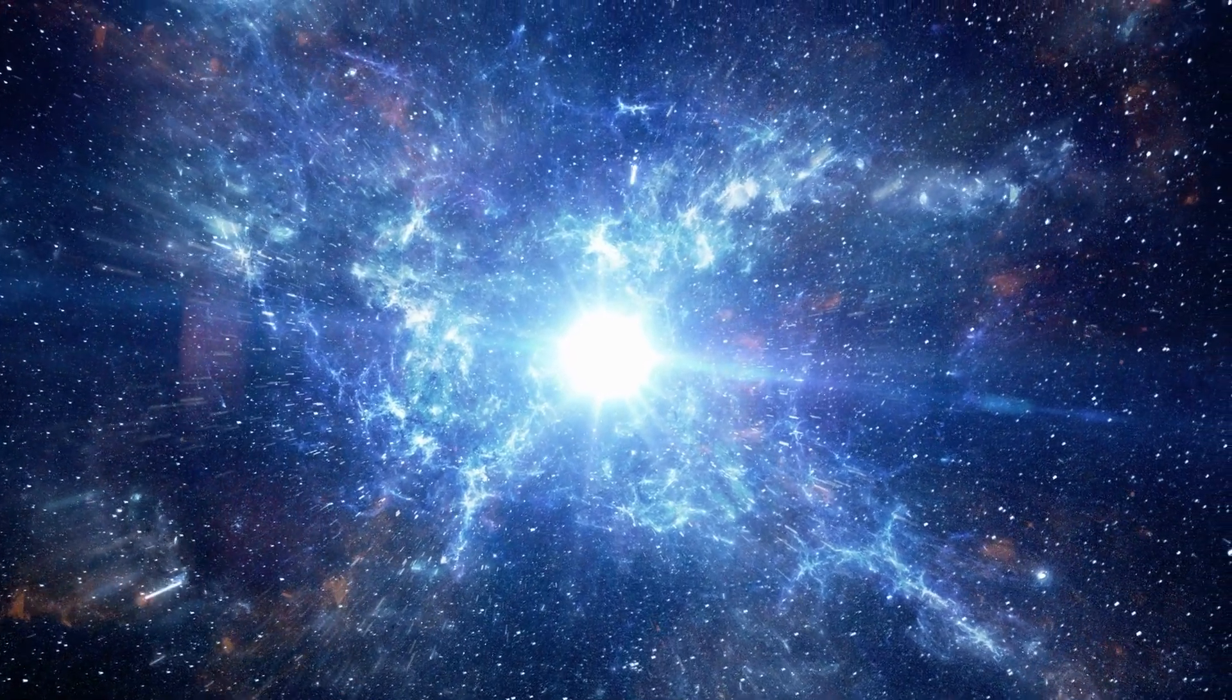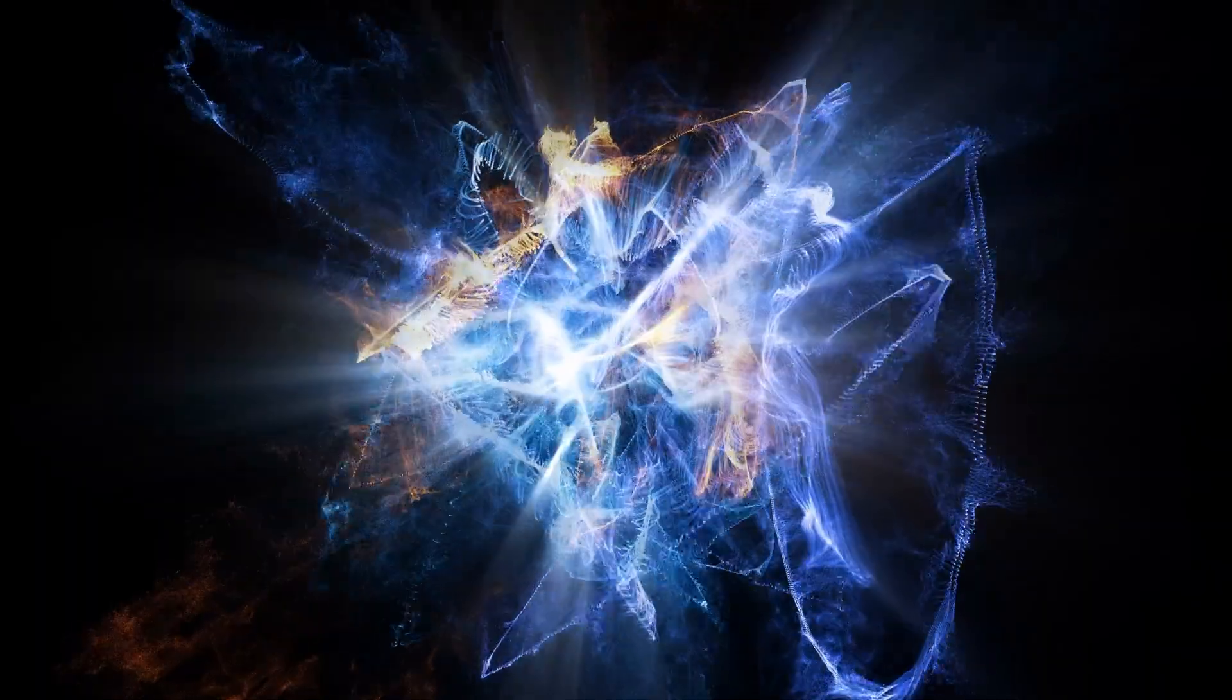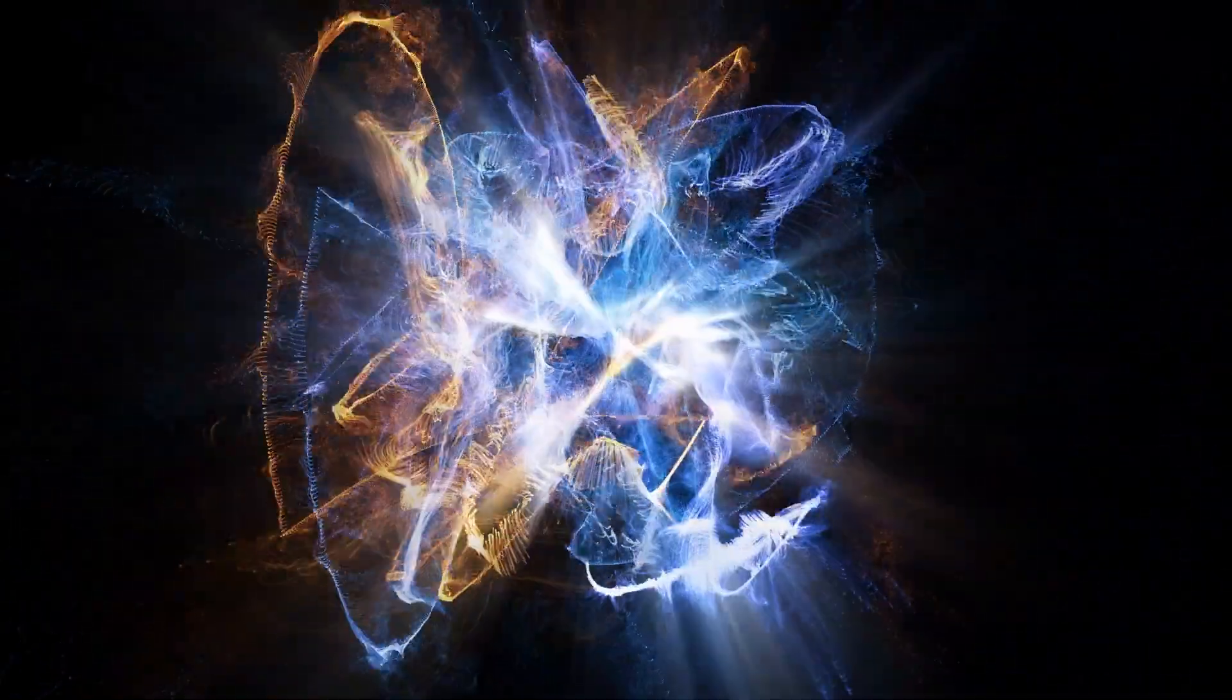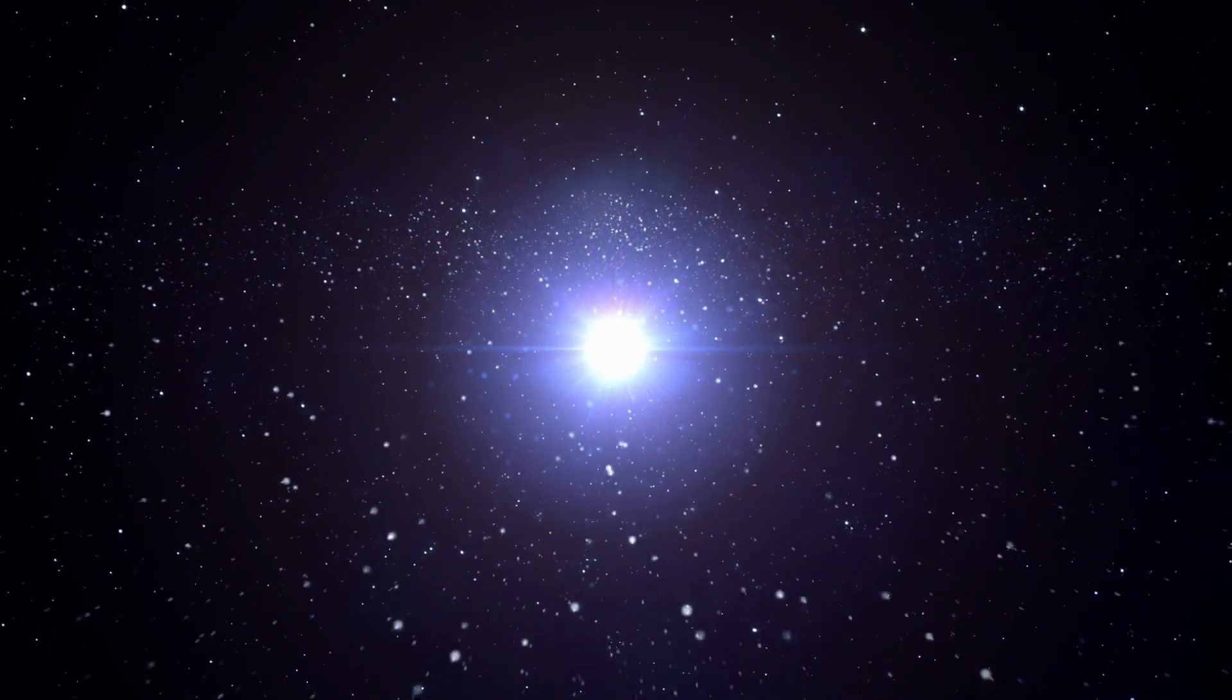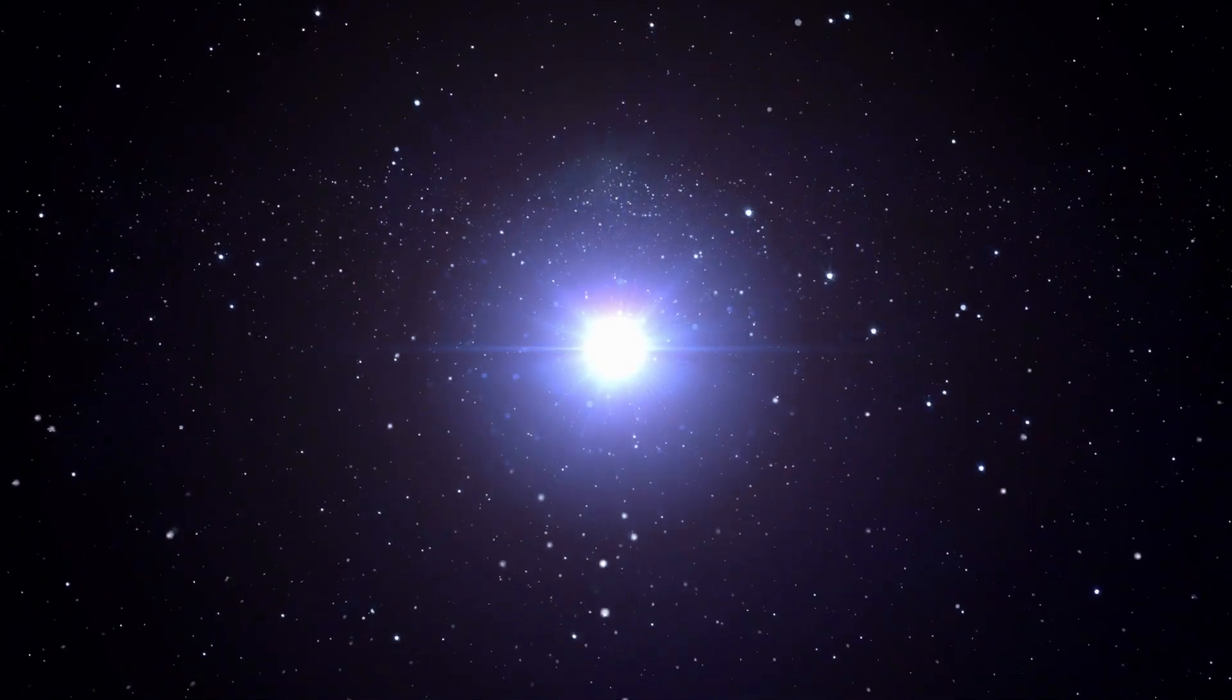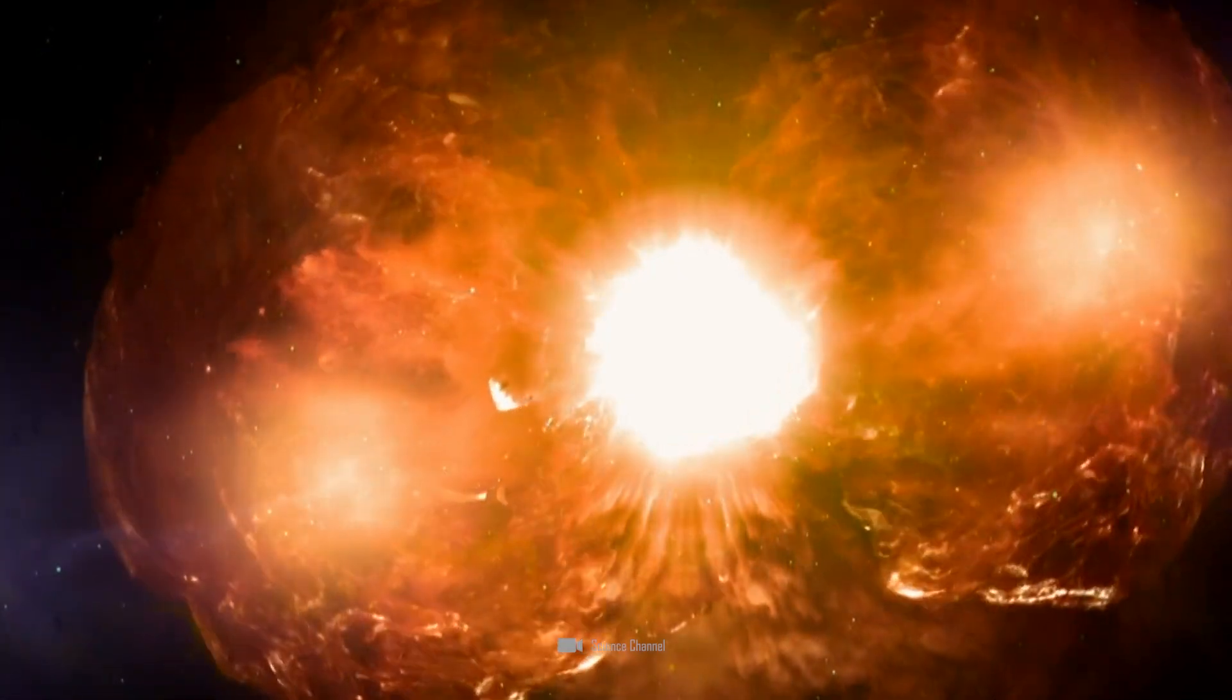The accumulated matter on the surface of the white dwarf consists mainly of hydrogen. When the mass of this hydrogen layer reaches a critical density, thermonuclear reactions begin. The reactions release enormous amounts of energy. Think of it like a giant hydrogen bomb. When it goes off, there is a sudden explosive brightening and the Nova becomes visible.